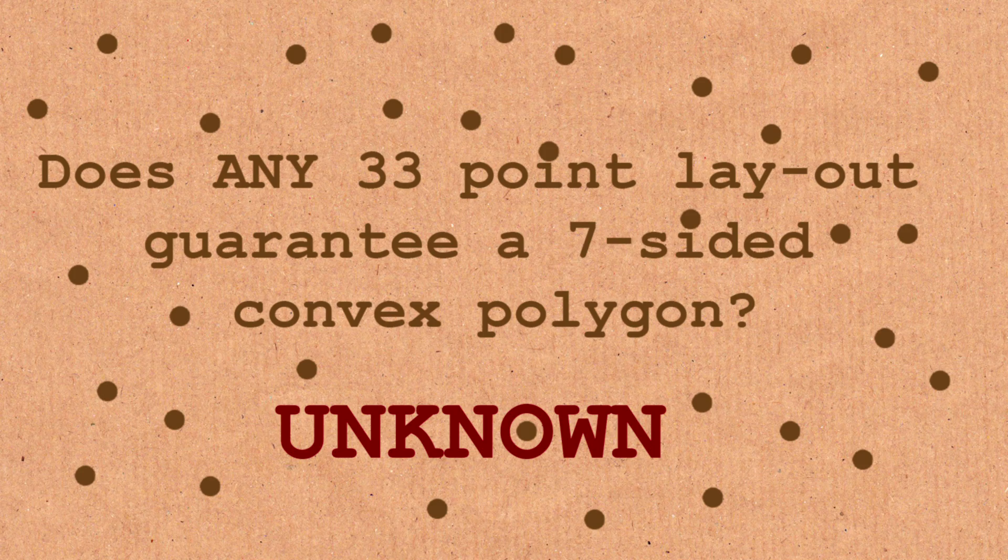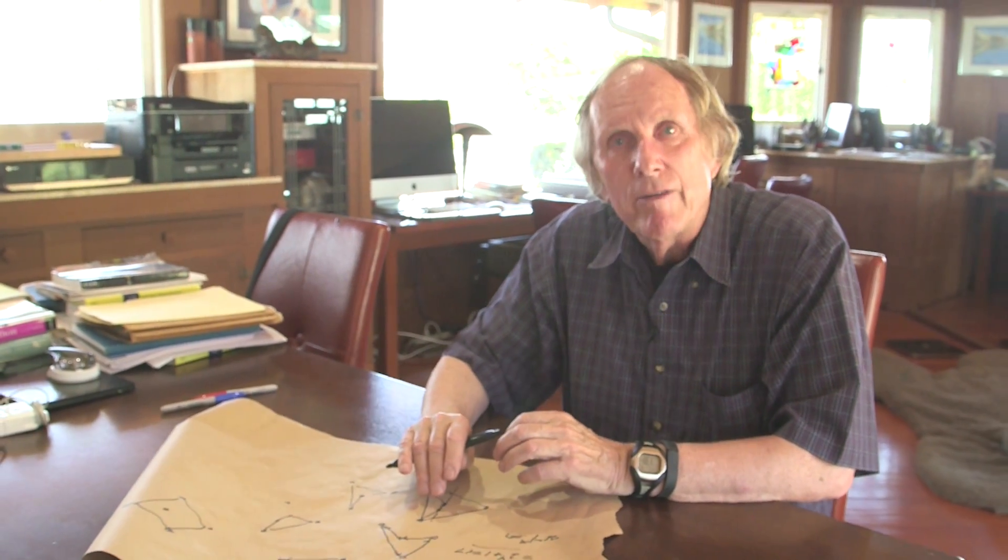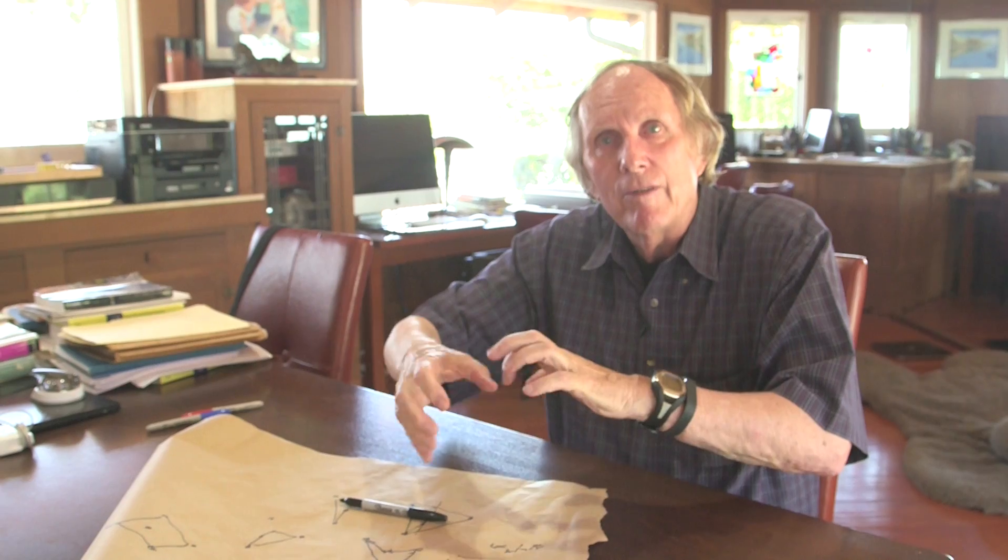It was known to n equals four right away. And five was done 30, 40 years ago. And six was just done and it used a fair amount of computer calculation because you have to look at all the different configurations of putting 17 points down in the plane. And there are a lot of different possibilities and you want to check that each one of them must have a convex six-gon.